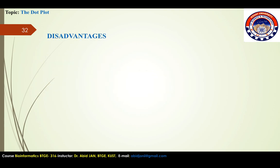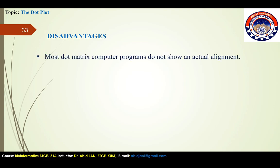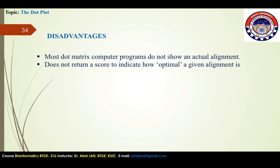Disadvantages of using dot plot: most dot matrix computer programs don't show an actual alignment and do not return a score to indicate how optimal a given alignment is. In other words, there is no statistical significance that could be tested using the dot plot.